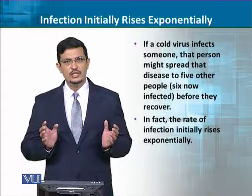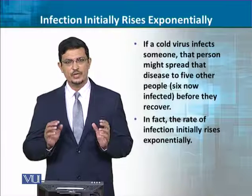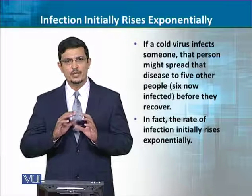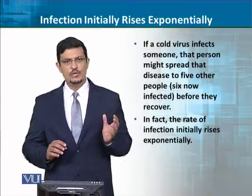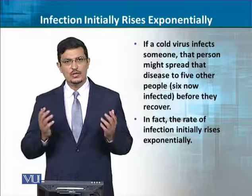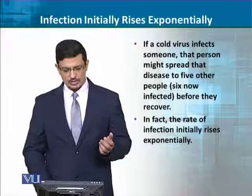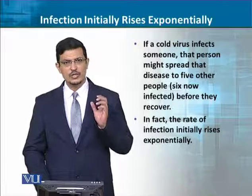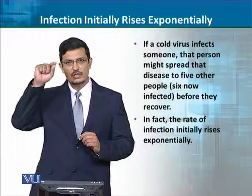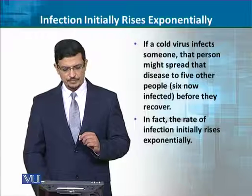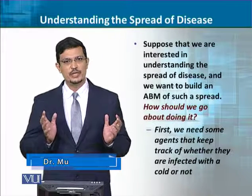Infection rises exponentially. Initially, kuch loog infect hote hain, phir woh infection ko phelate hain. For example, cold virus — woh kaisi phelta hain: kuch loog ko zukam lagta hain, woh un logon ke saath interact karte hain doosron ke saath, aur us wajah se woh cheez phailti jaati hain — jisko rate of spread kehte hain. Initially woh hamesha exponential hoti hain, yani fast rise. Toh agar hum isko understand karna chahein, to humare liye ek agent-based model banana chahiye.